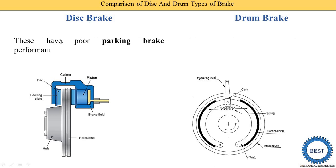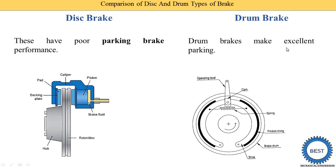In a disc brake, there is poor parking brake performance — we are not able to use the disc brake effectively as a parking brake. In a drum brake, the drum brake makes an excellent parking brake. When we use the hand brake, we use the internal expansion drum brake, so it gives the best results compared to the disc brake.